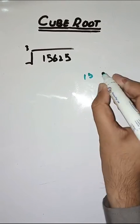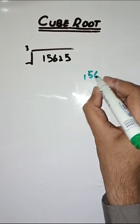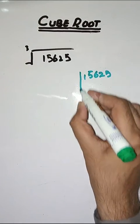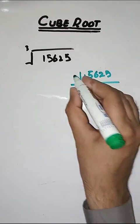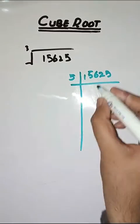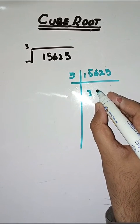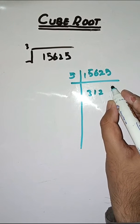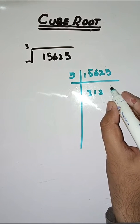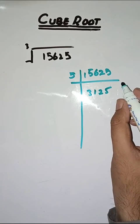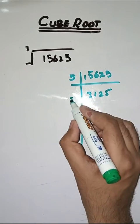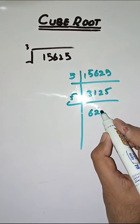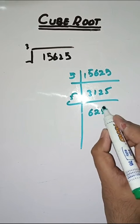So we start the prime factorization. 5 threes are 15, 5 ones are 5, and 12 fives are 25. Again with 5: 5 sixes are 30, 5 twos are 12, 10 and 25, 5 fives are 25.